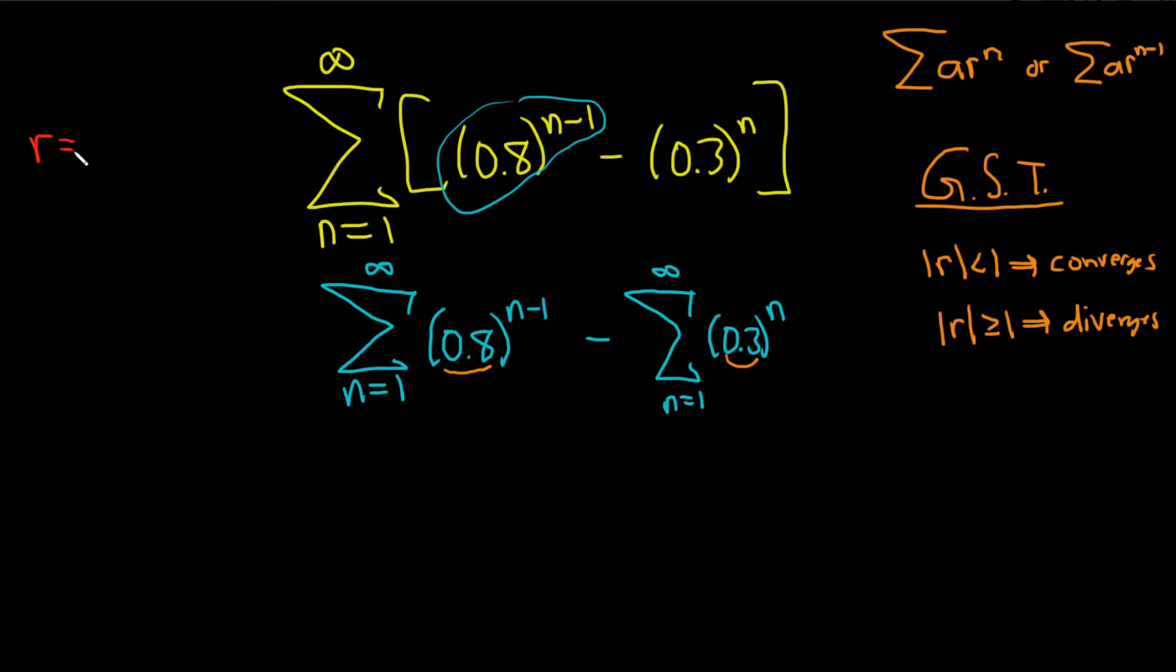So for the first one r is equal to 0.8 and then the absolute value of r is just the absolute value of 0.8 but that's just 0.8 and that's less than 1. So the first series converges by, it's really important to mention the test, the geometric series test. That takes care of the first one.